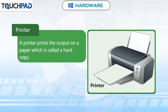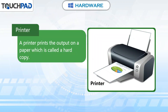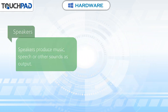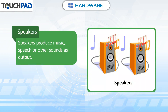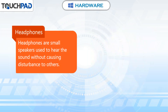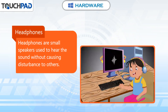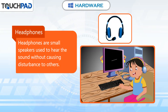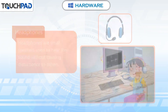Printer. A printer prints the output on a paper which is called a hard copy. Speakers produce music, speech or other sounds as output.